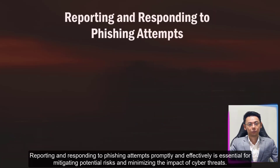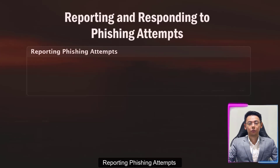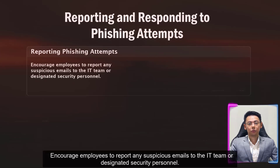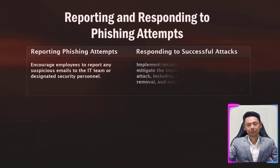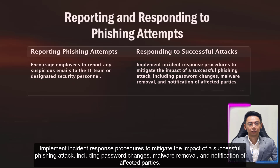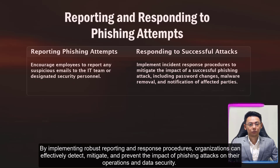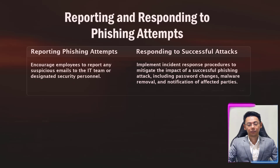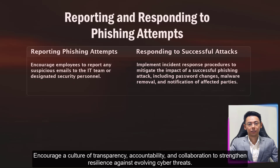Reporting and responding to phishing attempts promptly and effectively is essential for mitigating potential risks and minimizing the impact of cyber threats. Encourage employees to report any suspicious emails to the IT team or designated security personnel. Implement incident response procedures to mitigate the impact of a successful phishing attack, including password changes, malware removal, and notification of affected parties. By implementing robust reporting and response procedures, organizations can effectively detect, mitigate, and prevent the impact of phishing attacks. Encourage a culture of transparency, accountability, and collaboration to strengthen resilience against evolving cyber threats.